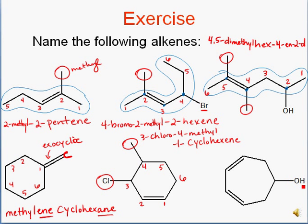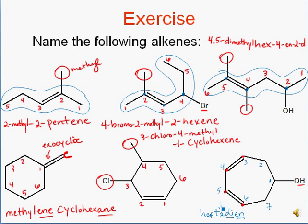This last one has an alcohol group and two alkenes. So the end of our name is going to include 'diene' — 'di' because there are two double bonds — and then 'ol' at the end because of the alcohol. This is a 7-membered ring, so 7 is 'hept'. With two double bonds we say heptadiene. We keep the 'a' in because 'heptdiene' is awkward to say, so it's heptadiene.